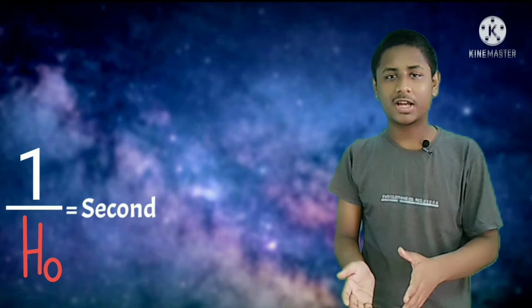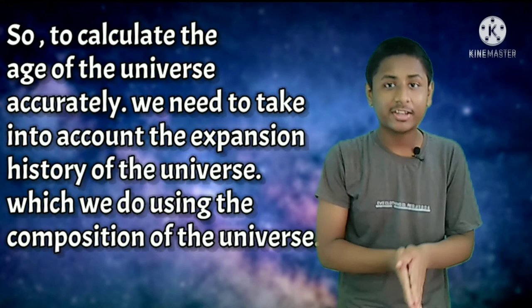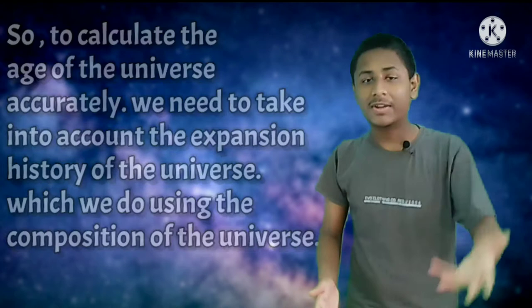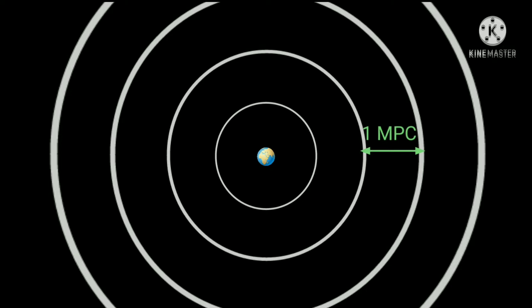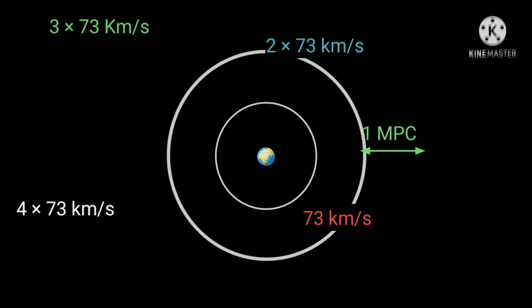But we know that the Hubble constant has been larger in the past, and a couple of billion years ago the expansion started accelerating again. So in reality, the age of the universe we get is actually less than what we would get by assuming the Hubble constant has not changed at all. After careful analysis of thousands of galaxies using supernova measurements, the value of the Hubble constant from this method is 73.5 kilometers per second per megaparsec — meaning every megaparsec away, the expansion rate is 73.5 kilometers per second faster. The age of the universe from this value is 13.2 billion years.